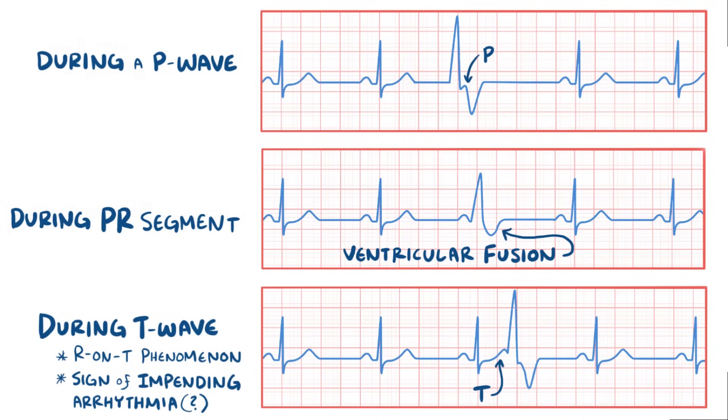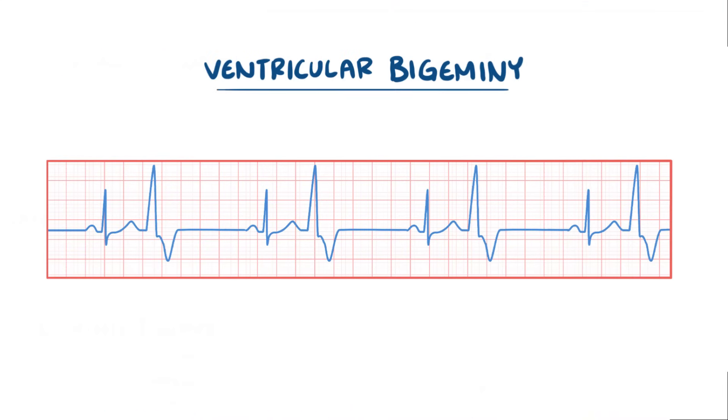Sometimes premature ventricular contractions can keep happening rather than be isolated events. For example, ventricular bigeminy is when a premature ventricular contraction consistently comes after each normal cardiac cycle.